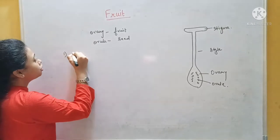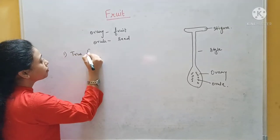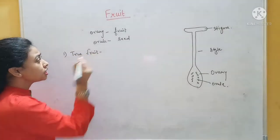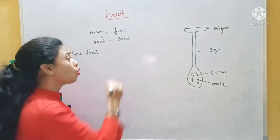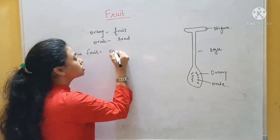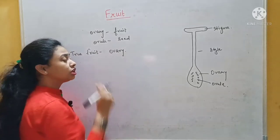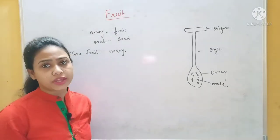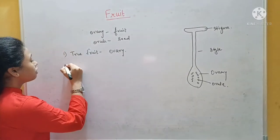The first one is called the true fruit. What is the true fruit? It is which is actually made from the ovary — which is made from the ovary, that is called the true fruit. Like mango — that is the true fruit.